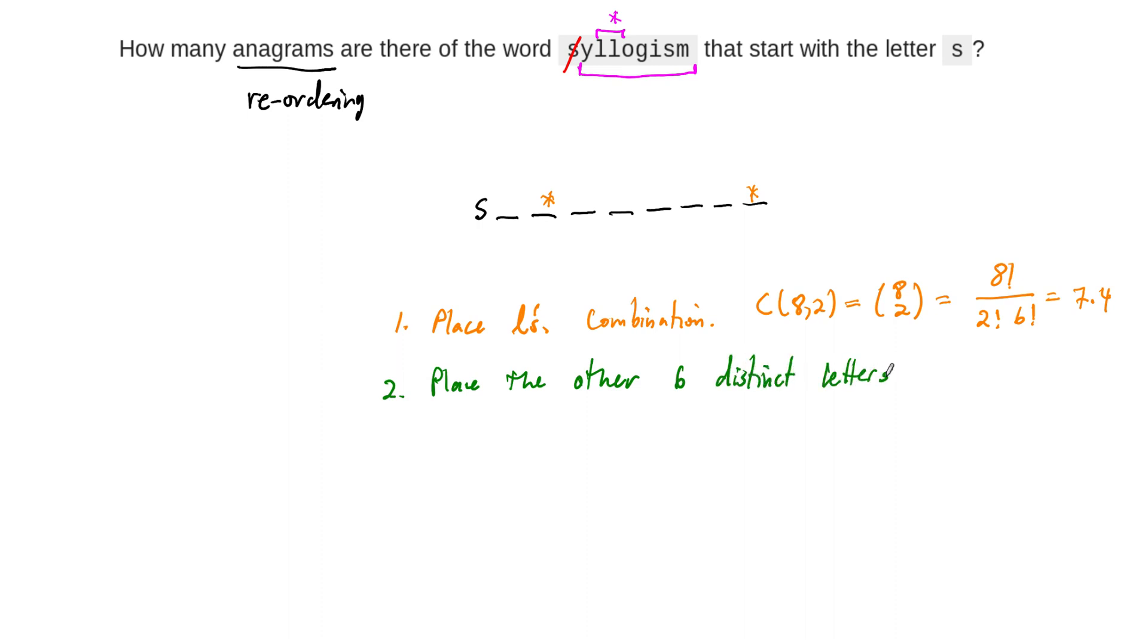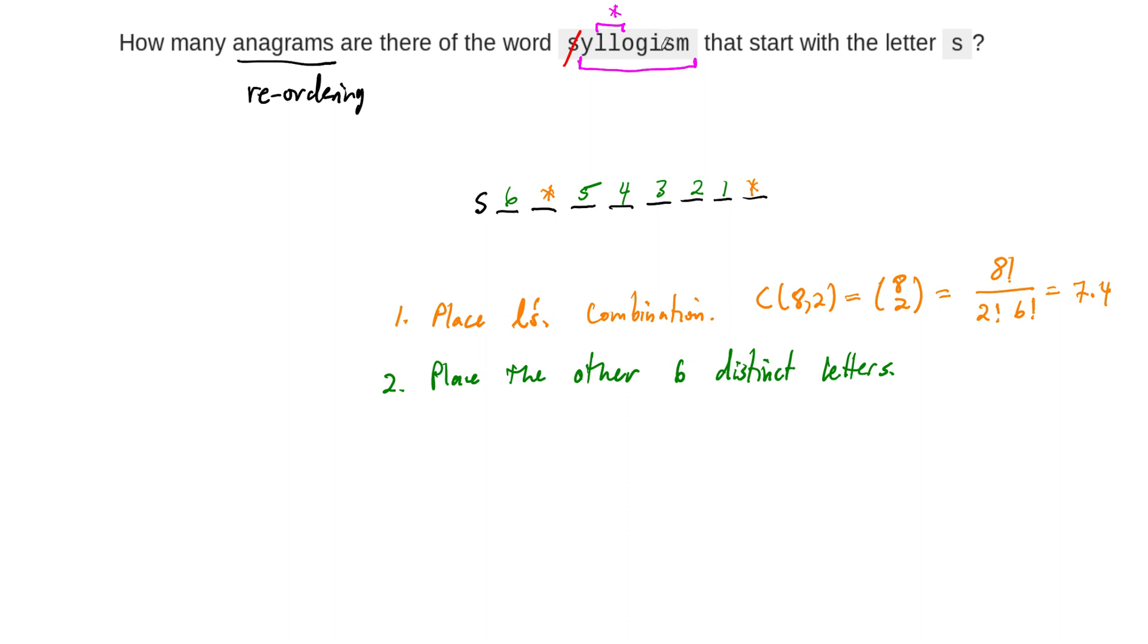And they go in 6 spots. So that's going to end up giving us 6 factorial choices. Because we have 6 choices for here. Once that's done, we have 5 more choices here, 4 more here, 3 more here, 2 more here. That one's just going to be fixed. So the number of ways that we can place the other 6 letters after we've placed the L is going to be 6 factorial.